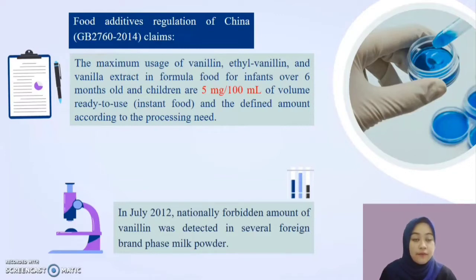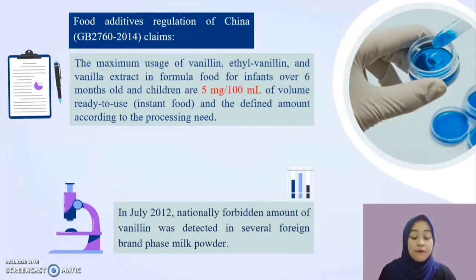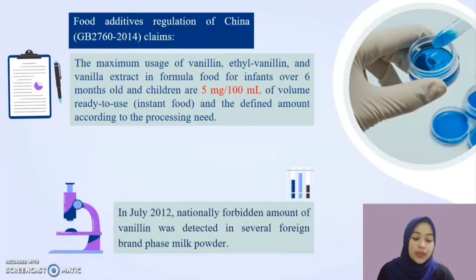So far, there is no national standard method for vanillin determination. In July 2012, a nationally forbidden amount of vanillin was detected in several orange-flavored milk powder. Therefore, it is obvious that a quick and effective analysis method is needed for determining the vanillin content in food.